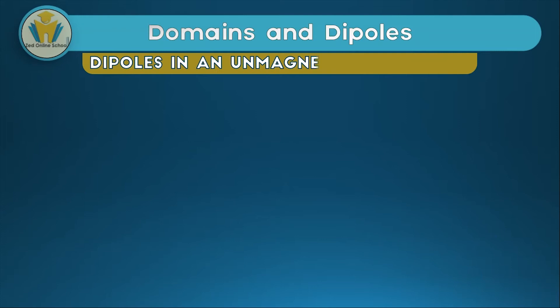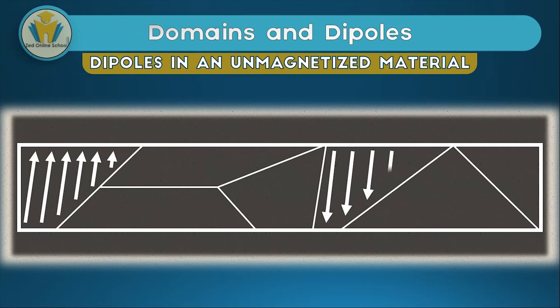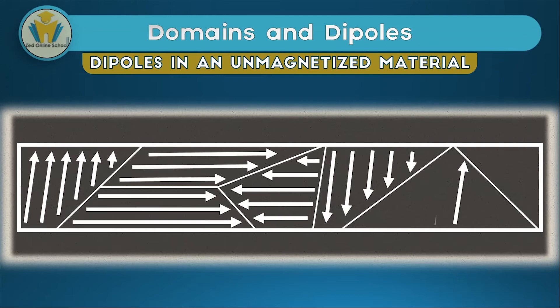Dipoles in an unmagnetized material also have a certain pattern. They have a pattern that shows the dipoles are canceling each other. If we have dipoles pointing in this direction, we'll have others pointing in the opposite direction. Therefore, there will be no magnetic effect made by these dipoles. In an unmagnetized material, the dipoles will be forming loops or simply canceling each other.